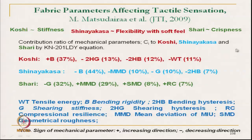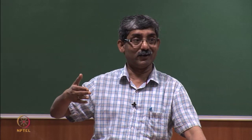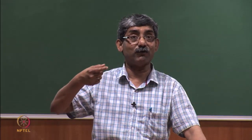Shari is crispness of the fabric. G, the shear stiffness, has a contribution of 32 percent — about one third. But higher shear stiffness will give lower Shari value, lower crispness. So if we want higher Shari (higher crispness), we need lower G value. Another contribution which is positive in nature is MMD — mean deviation of mu. Higher MMD — where friction varies at different points — gives crispness.